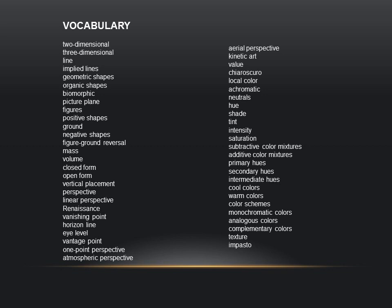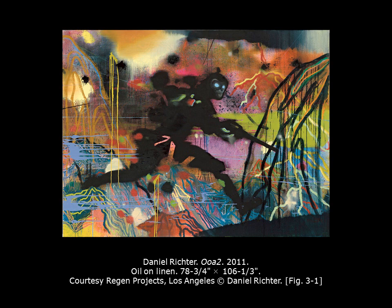Lesson three is actually the largest one of the entire course, and therefore it's going to have a lot of vocabulary in it. There are a total of 52 vocabulary words for lesson three. So far in the last two lessons we've gone over some of the possibilities of what art can be and the reasons why people make art and how it functions in our lives. In lesson three, the visual elements, we're starting to look at works of art in more of a technical fashion.